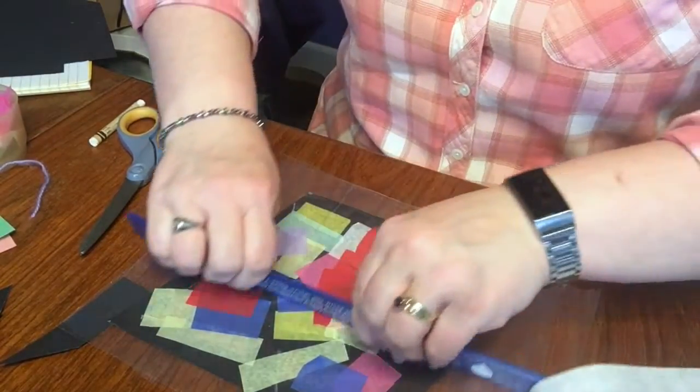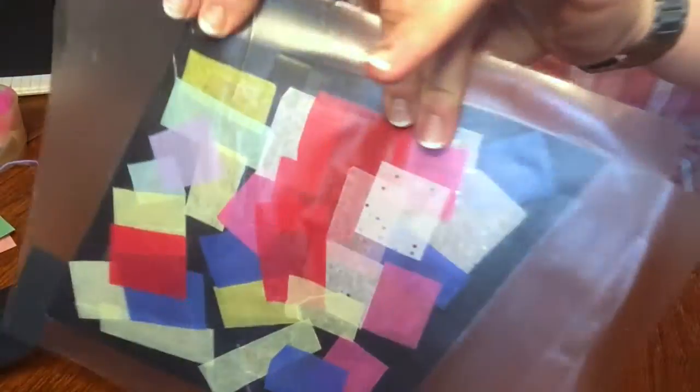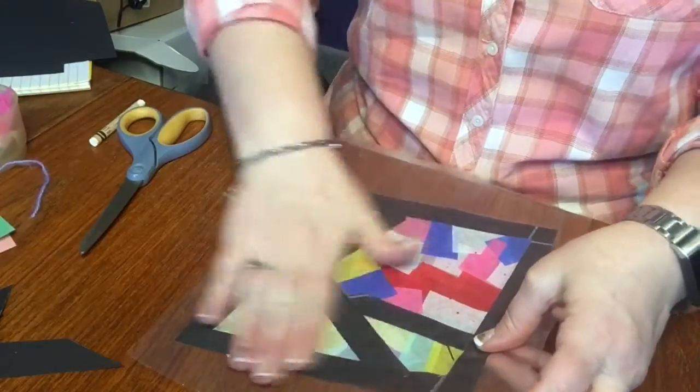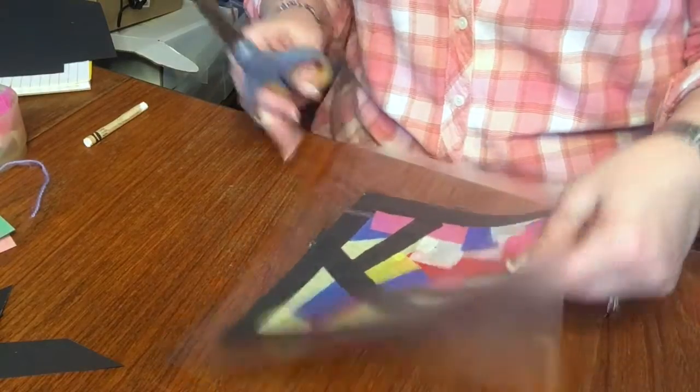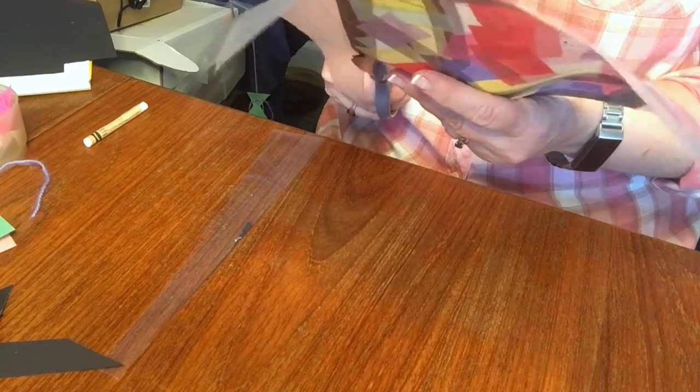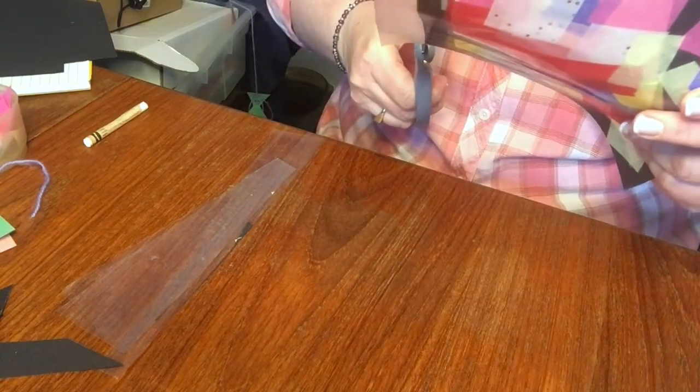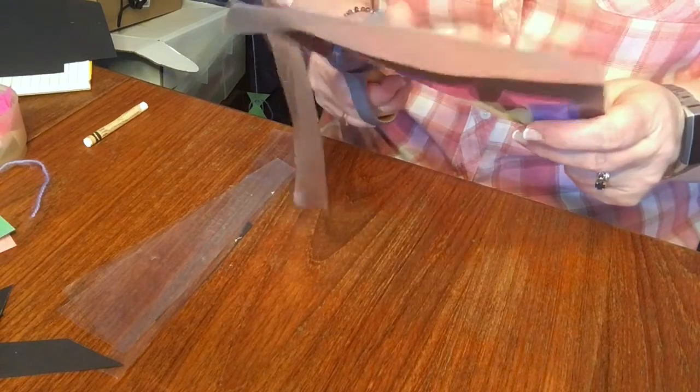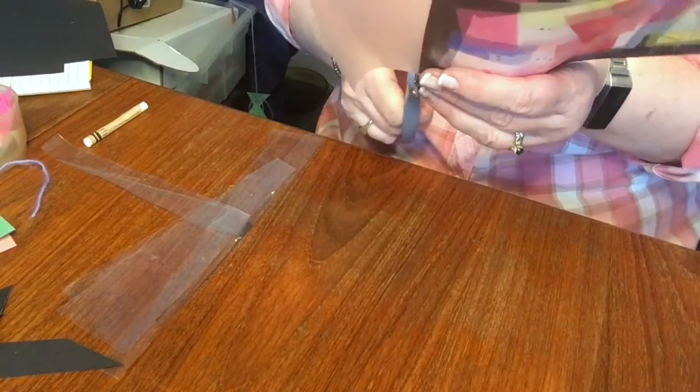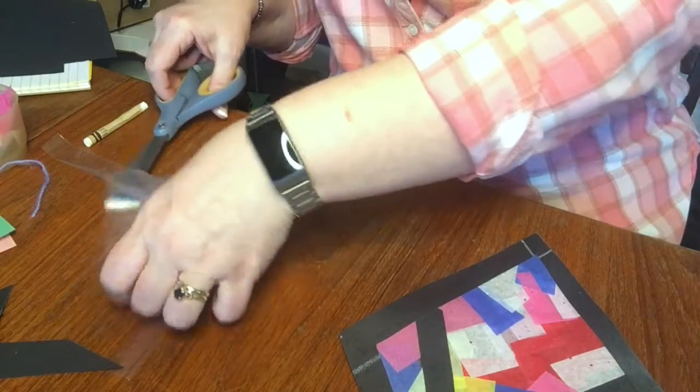All right, so mine got a little bit stuck to my table, but I'm going to peel it right off. Not too bad. Now we're going to take our scissors and we're just going to cut around the edge of our contact paper to get all the excess off. This can absolutely go in the trash.